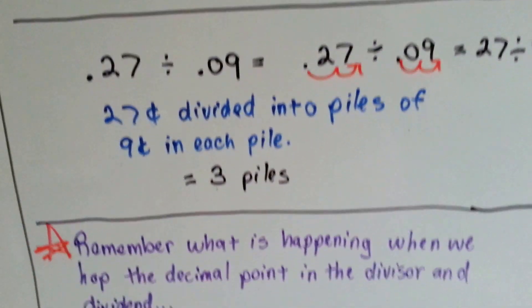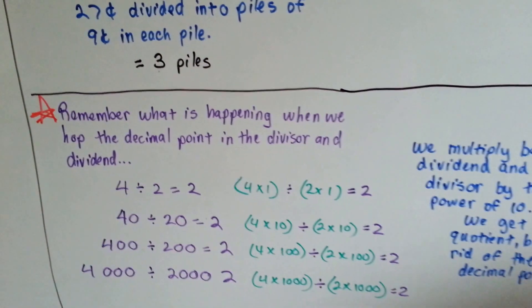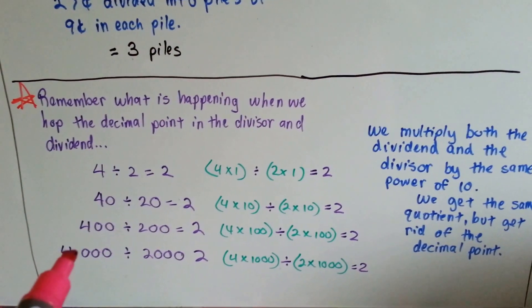But if we did have 27 cents split into piles of 9 cents each, we would have three piles. So remember what is happening when we hop that decimal point in the divisor and the dividend.